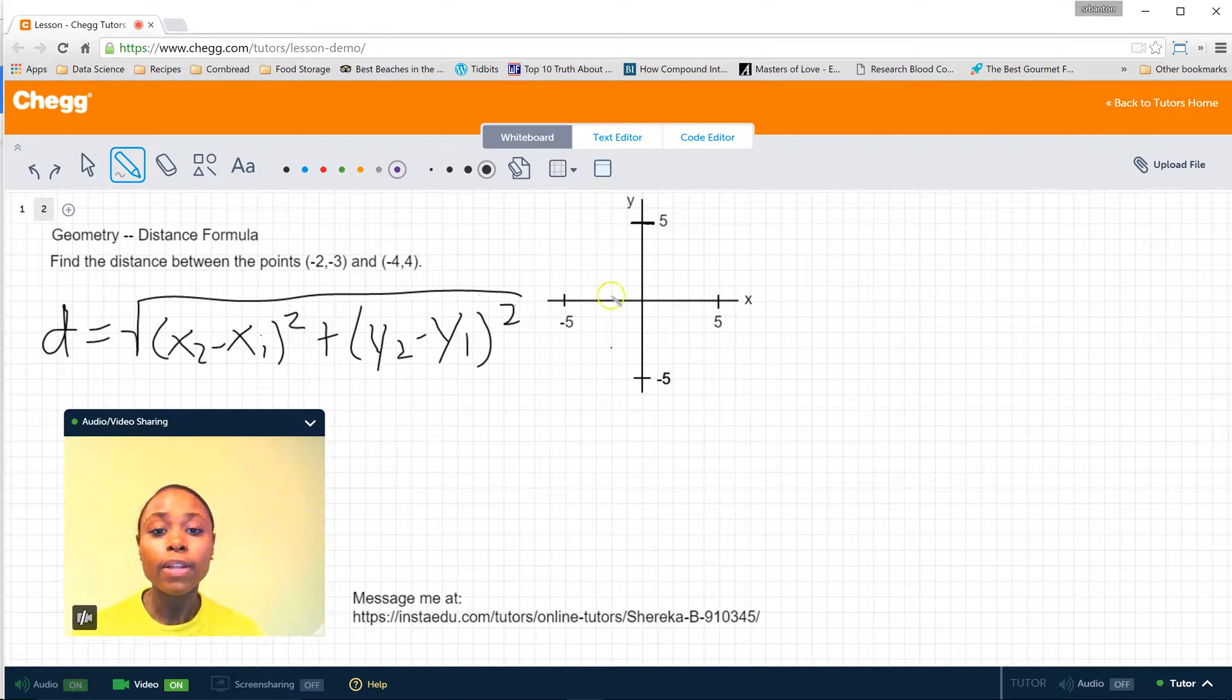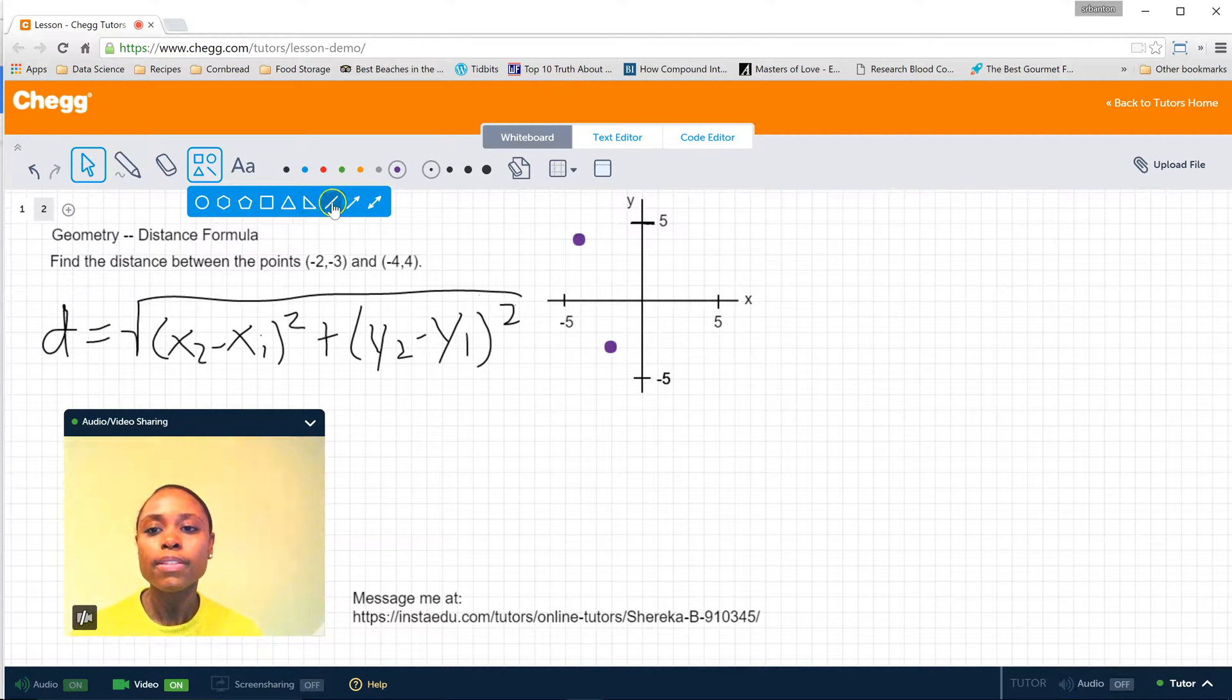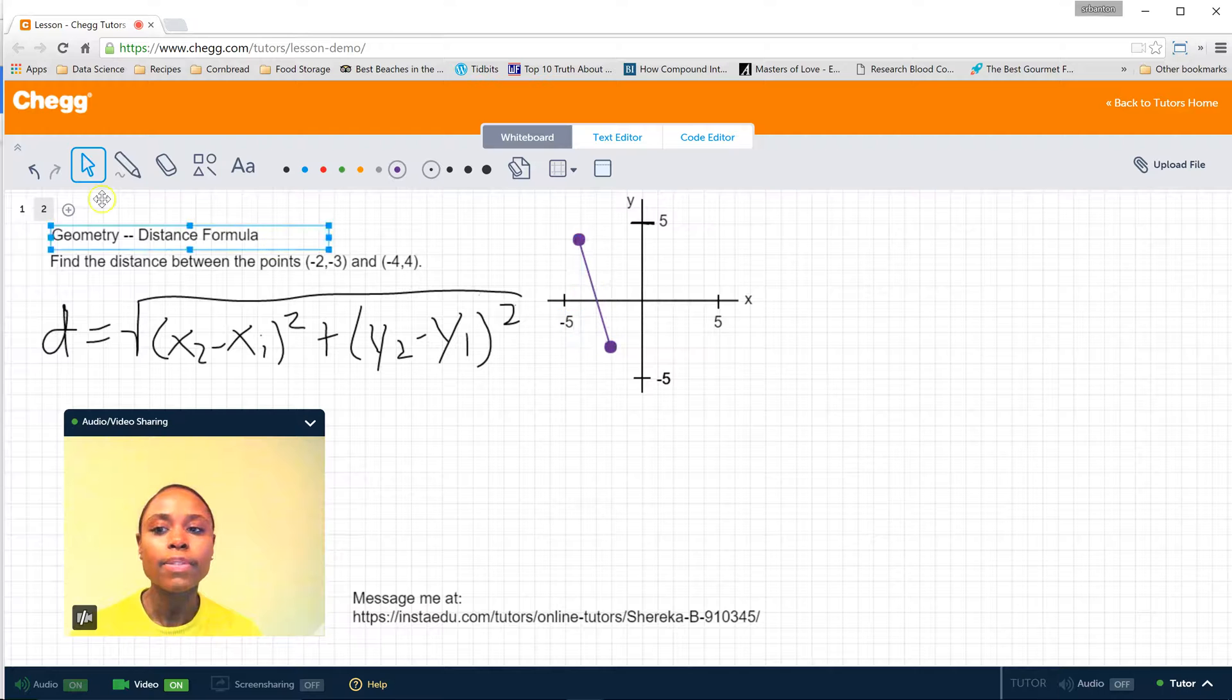So first, let's plot (-2, -3). That would be here, as indicated by the purple dot. And then let's plot (-4, 4), which is here. So if we now draw a line between these two points, we can see that this is the line whose distance we're actually calculating since this is the line that will connect these two points and will represent the distance between these two points.